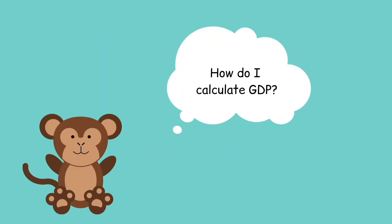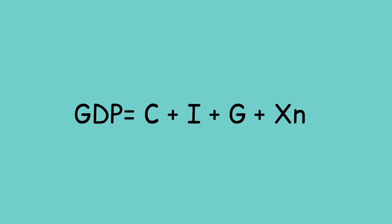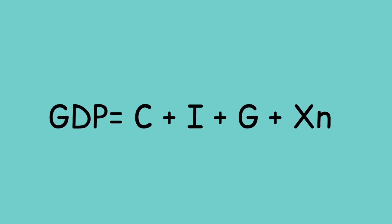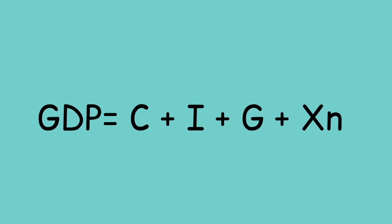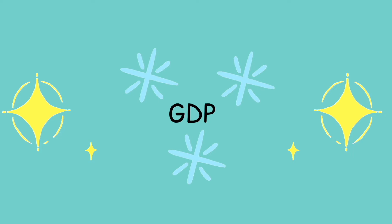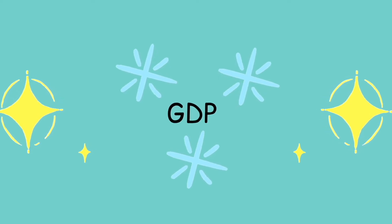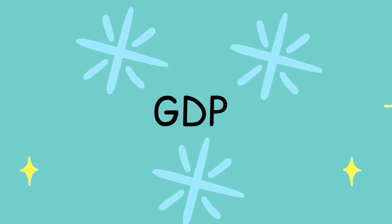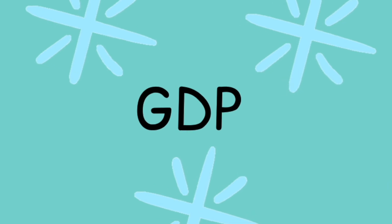How do I calculate GDP? GDP equals C plus I plus G plus XN. That looks complicated. It seems pretty complex at first, but once you break it down, the concept becomes really simple.